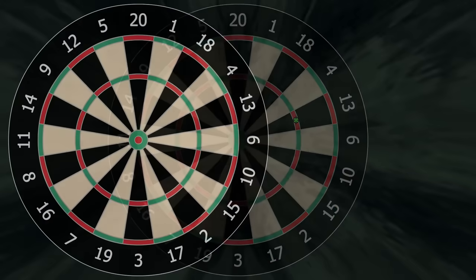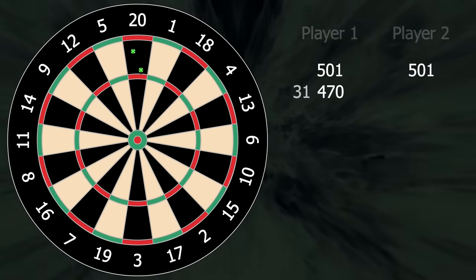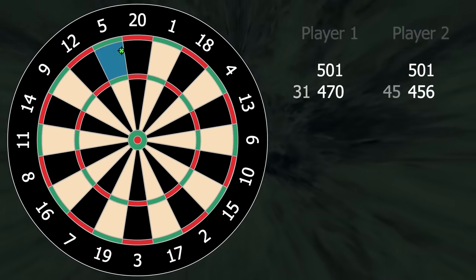So both players start a leg of darts with 501 points. They each take their turn to throw 3 darts and the objective is to get down to 0. But your last dart needs to be a double, including the bullseye.